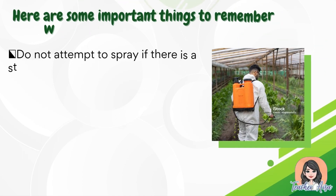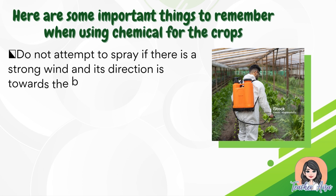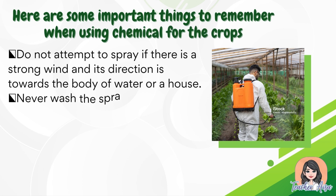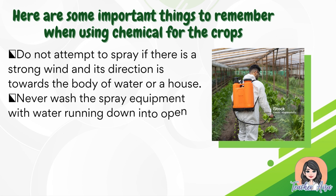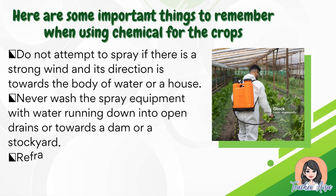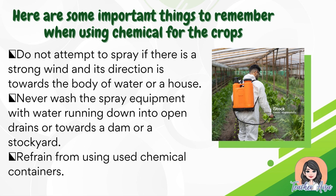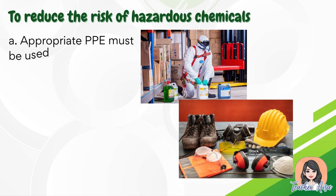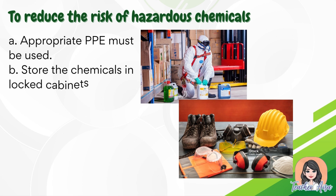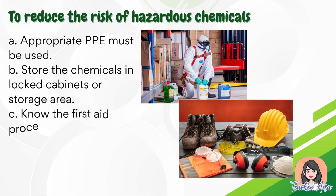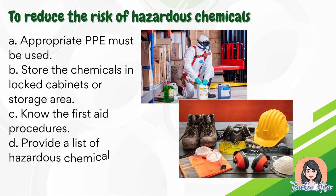Here are important things to remember when using chemicals: do not attempt to spray if there is a strong wind directed towards a body of water or a house; do not let spray equipment run off into open drains or towards a dam or stockyard; refrain from using used chemical containers. To reduce risk, appropriate PPE must be used, chemicals should be stored in locked cabinets, know first aid procedures, and provide a list of hazardous chemicals used in the farm.